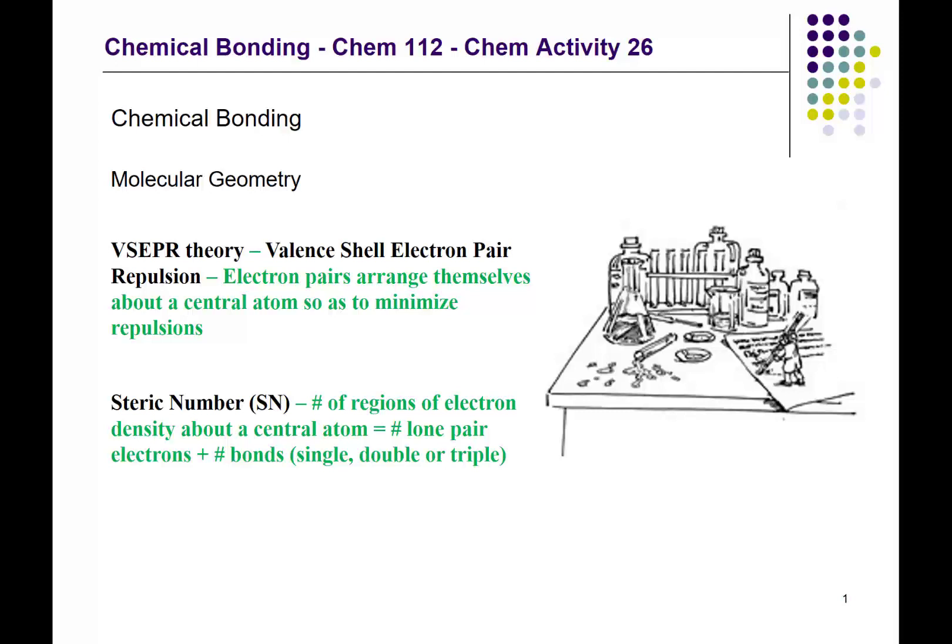These electron pairs can be bonding pairs or lone pairs. Another useful concept is the steric number, which is the number of regions of electron density about a central atom — either lone pair electron regions or bond regions. The steric number equals the number of lone pairs plus the number of bonds, whether single, double, or triple. I will fine-tune this definition as we go along, but you need a little more background theory before we can do that.